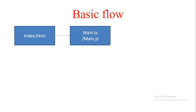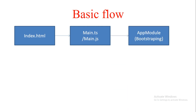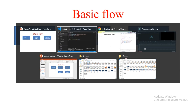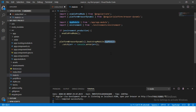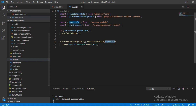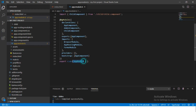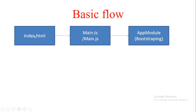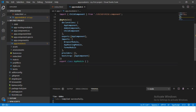So index.html has dynamic scripts loaded by CLI, which is main.js — the compiled JavaScript form of main.ts, because the browser understands JavaScript and not TypeScript. The third step behind the scenes is that main.ts does nothing but bootstrapping — initiating an instance of AppModule. You can see here 'bootstrapModule(AppModule)'. This main.ts bootstraps AppModule. AppModule actually indirectly bootstraps AppComponent. So behind the scenes, AppModule creates an instance of AppComponent.